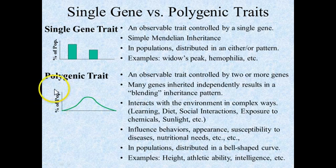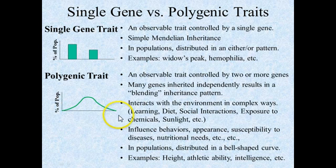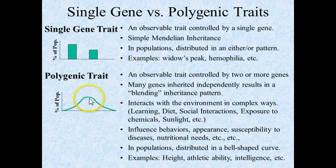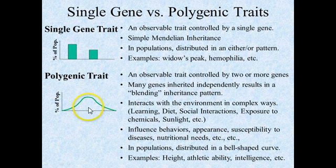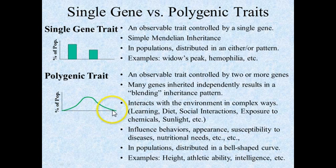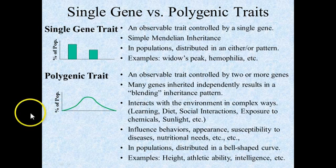The percent of population would be on the y-axis, and then the range — whether this is intelligence, height, or athletic ability — would be on the x-axis. There is some median or central place where most people fall, and then as you move to the opposite ends, you have fewer and fewer people at the extremes.